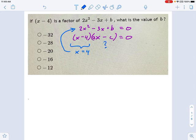Let's plug x equals 4 back into that top line. I get 2 times x equals 4 squared minus 3 times x equals 4 plus b equals 0.